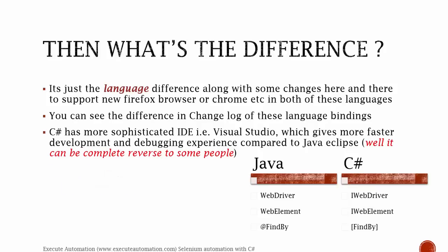Other than the naming, the functionality is very much the same. Similarly, in Java we use annotations for finding elements in page object model, written as @FindBy, whereas in C Sharp we use attributes declared with square brackets. These are some of the minor differences you'll see between these two languages.